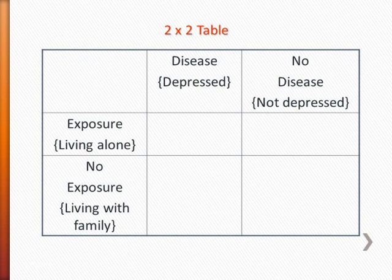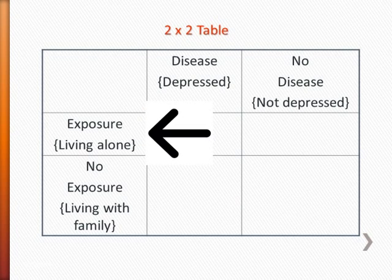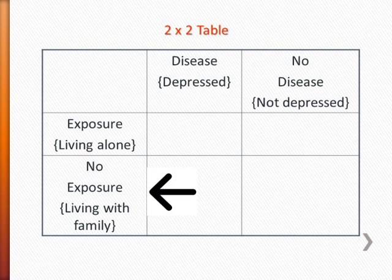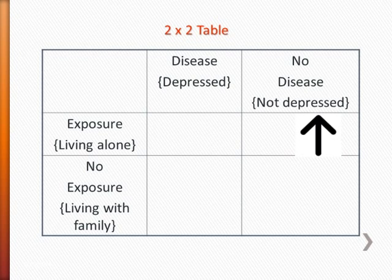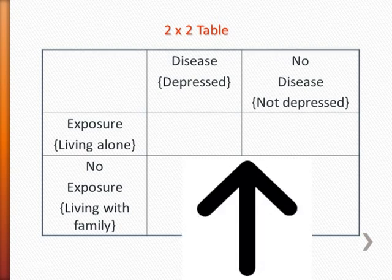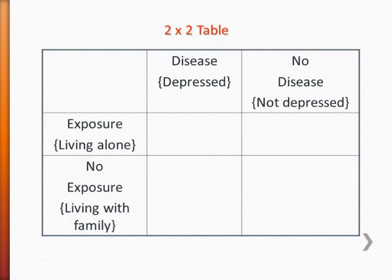Looking at this two-by-two table, those living alone become the exposed group, while those living in families become the non-exposed group. We look at how many from the exposed group are suffering from depression and how many are not, and the same applies for those not living alone — whether they suffer from depression or not. From this table we can assess whether people living alone have a higher prevalence of depression compared to those living with their families.